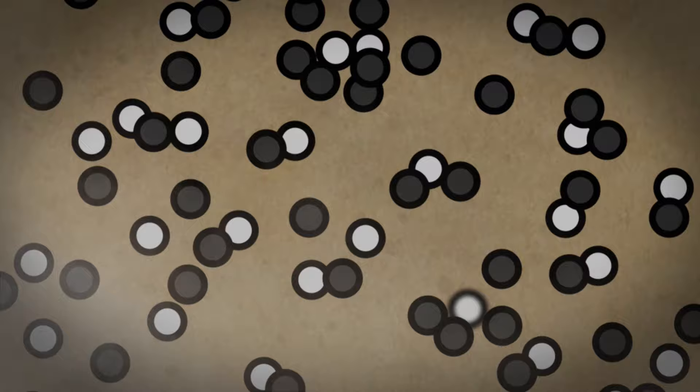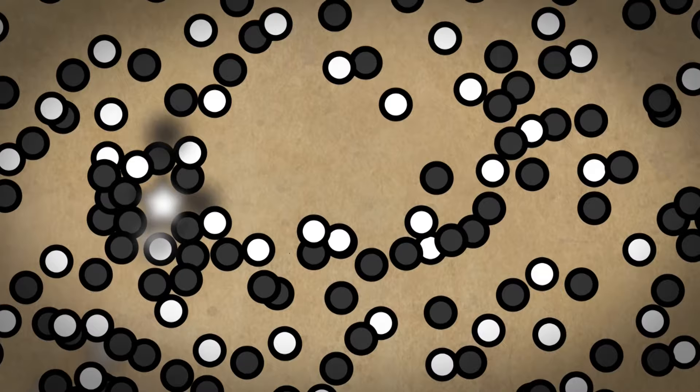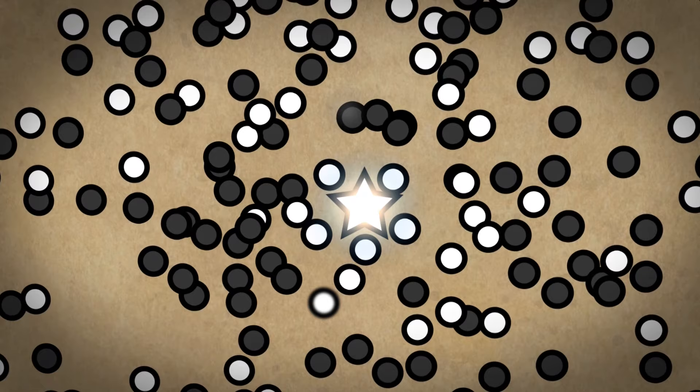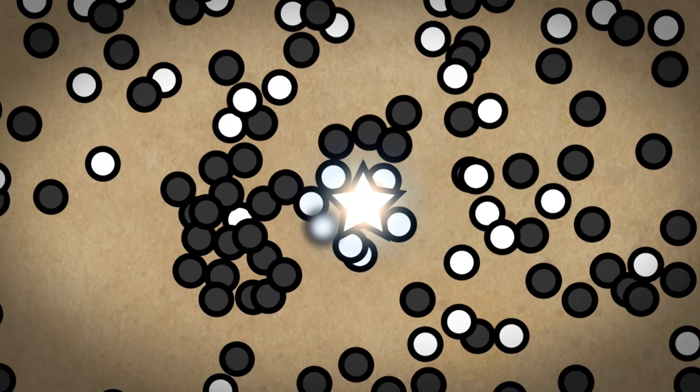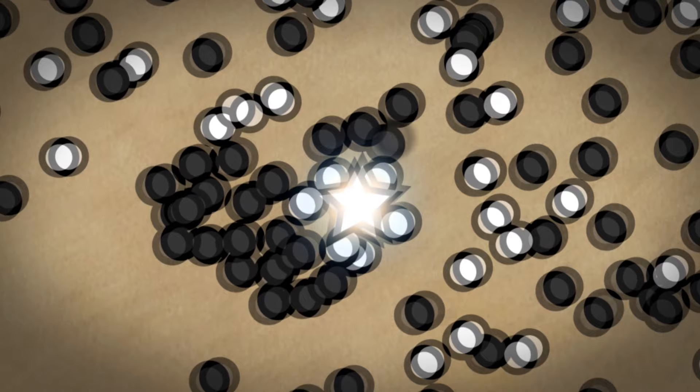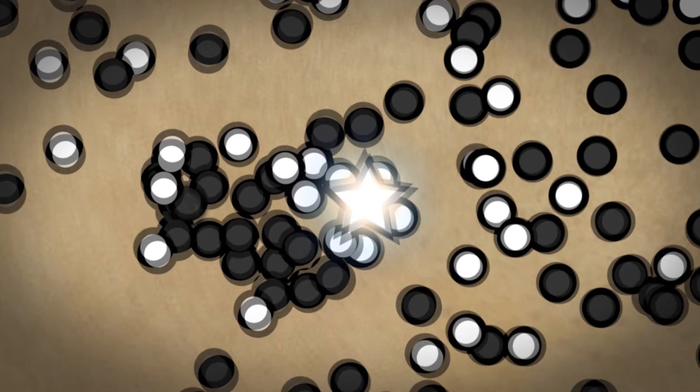The polytheists martyred many of the Muslims that day. A group of polytheists even attacked the messenger of Allah directly. The believers jumped in front of the arrows fired at the prophet and shielded his body to protect him. In the meantime, Utba, one of the polytheists, threw a large stone at the prophet. This stone hit the prophet in the face. The prophet's helmet split his cheek and broke a tooth. At that moment, the earth and the sky trembled.